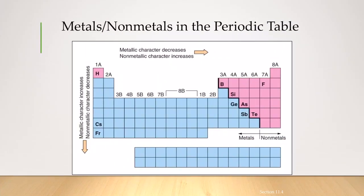One trend that can be followed in the periodic table is, as you go from left to right of the periodic table, the non-metallic character increases.